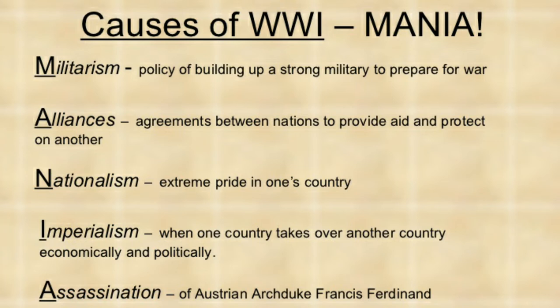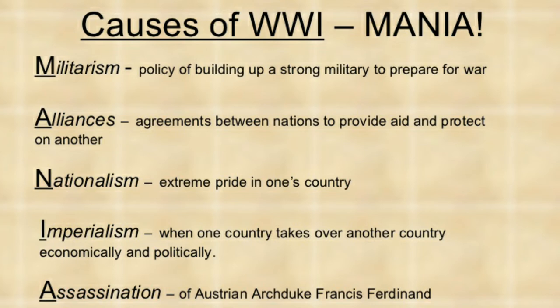When we talk about the First World War, let us understand the causes, and I will explain them with the word MANIA — M-A-N-I-A. The 'M' stands for militarism, meaning European countries adopted the policy of building up a strong military power for war and started preparing for wars. The 'A' stands for alliances — agreements between nations to provide aid and protect one another. The triple alliance and triple entente were formed, dividing all of Europe into competing alliance blocs.